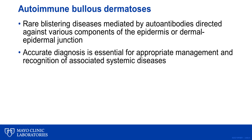Autoimmune Bullous Dermatoses comprise a rare category of blistering skin diseases caused by the development of autoantibodies against various constitutive parts of the epidermis or the dermal-epidermal junction. For example, pemphigus develops when autoantibodies are directed against desmogleins — the proteins that glue keratinocytes of the epidermis or mucosal epithelium to one another. Whereas pemphigoid develops when autoantibodies are directed against bullous pemphigoid antigens, which help to hold the basement membrane zone together.